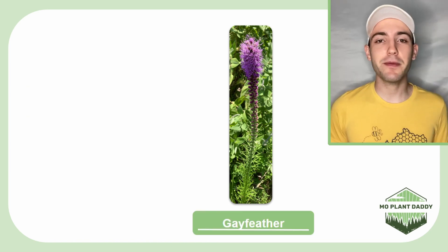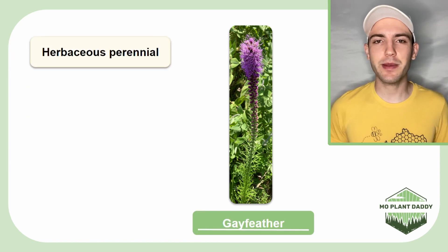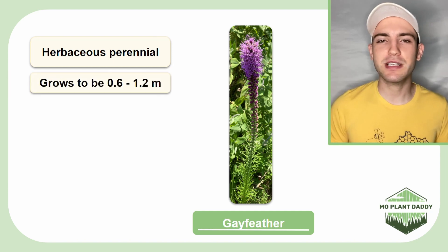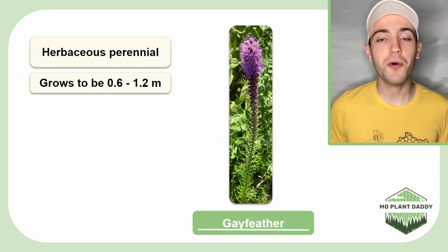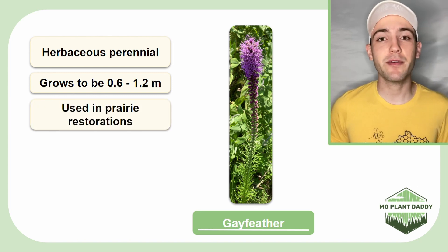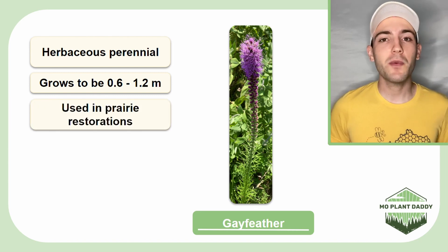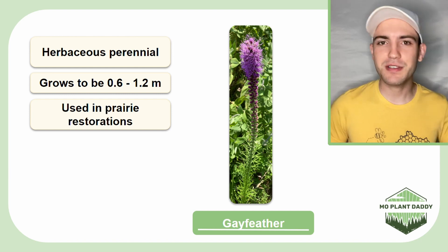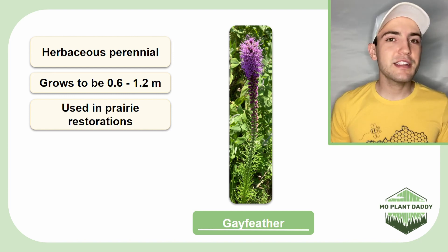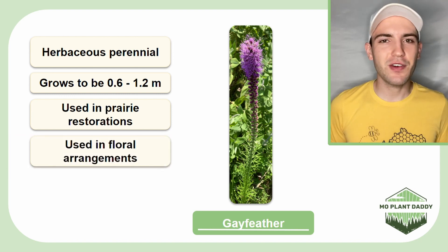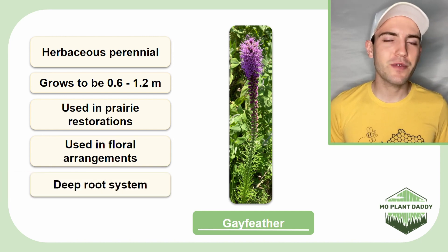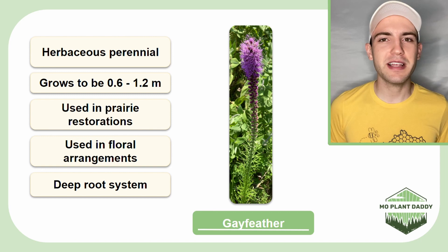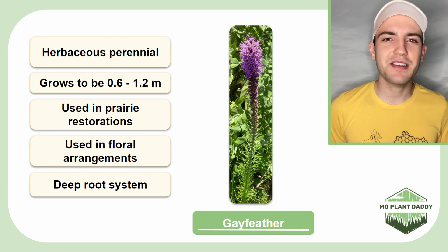Gay feather is a herbaceous perennial plant that grows to be about 0.6 to 1.2 meters tall. This species is commonly used in native plant gardens or prairie restorations because it provides food for wildlife while producing beautiful flowers. These flowers are occasionally used by florists in floral arrangements. Additionally, gay feather has a long root system that can penetrate more than 10 feet down into the soil.